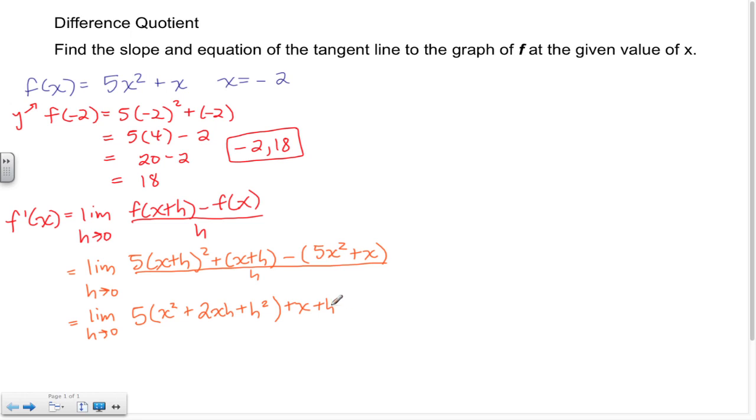Now I distribute, so these signs change: negative 5x squared minus x, and again everything here is divided by h.